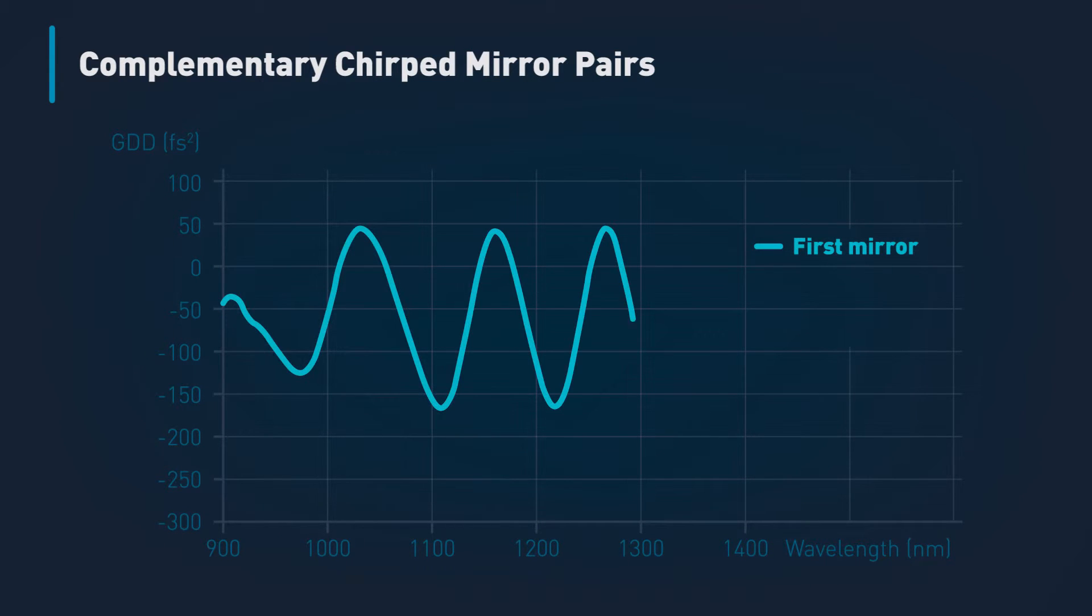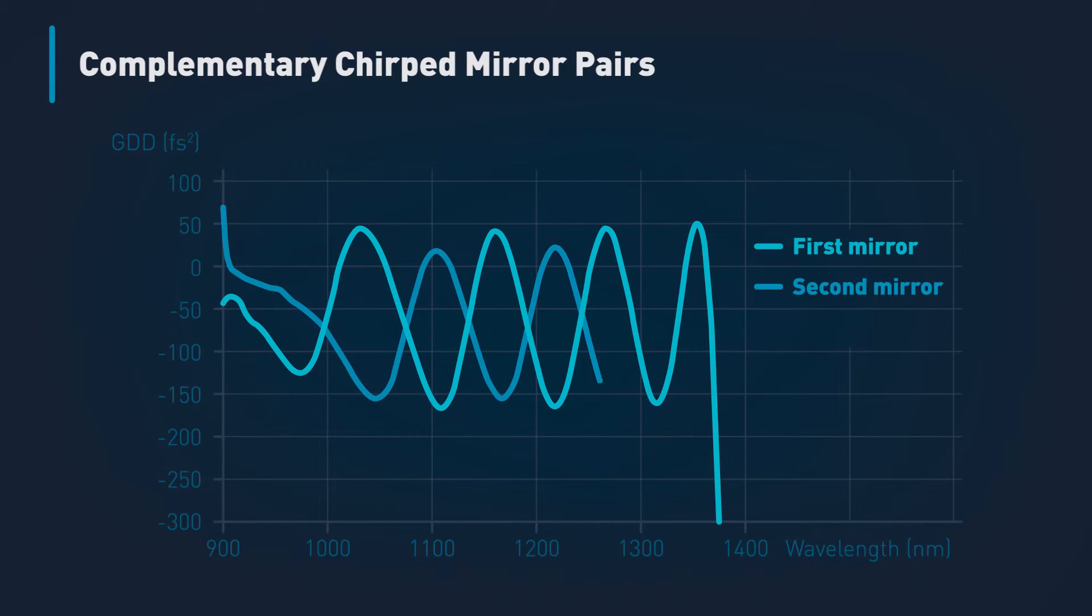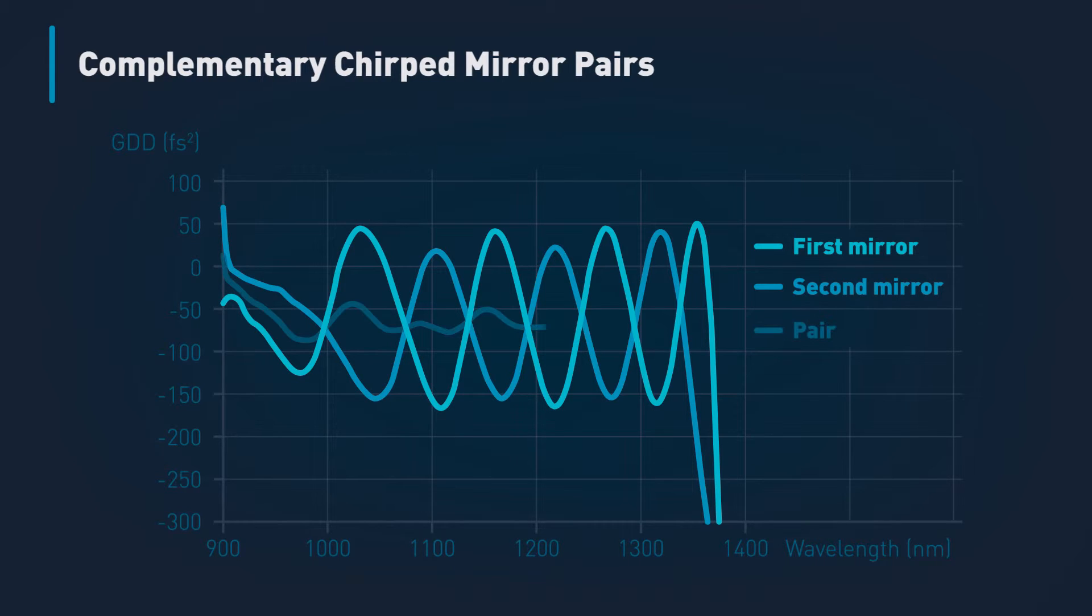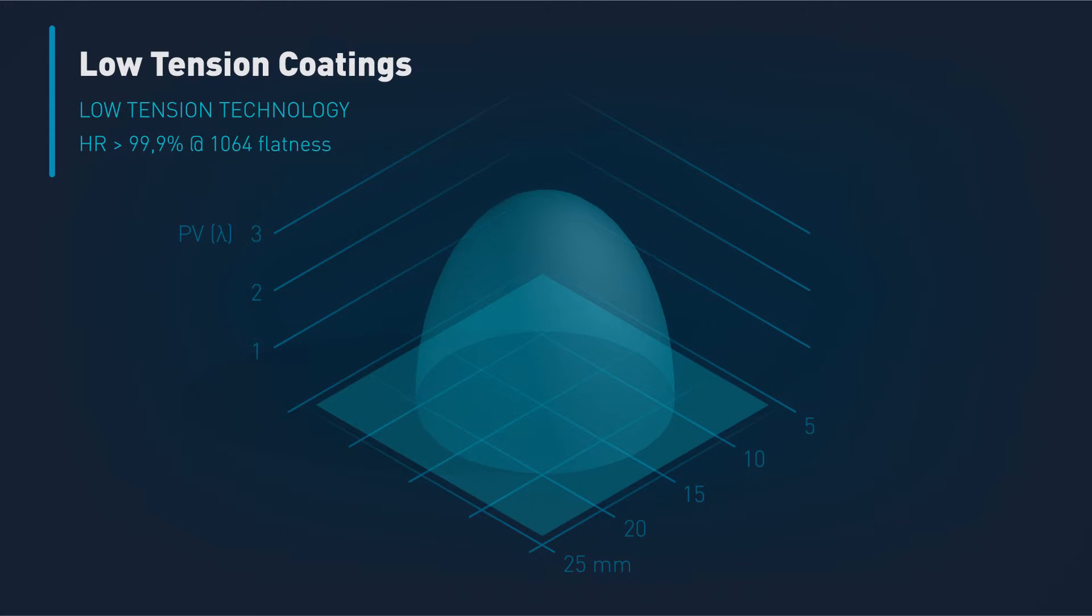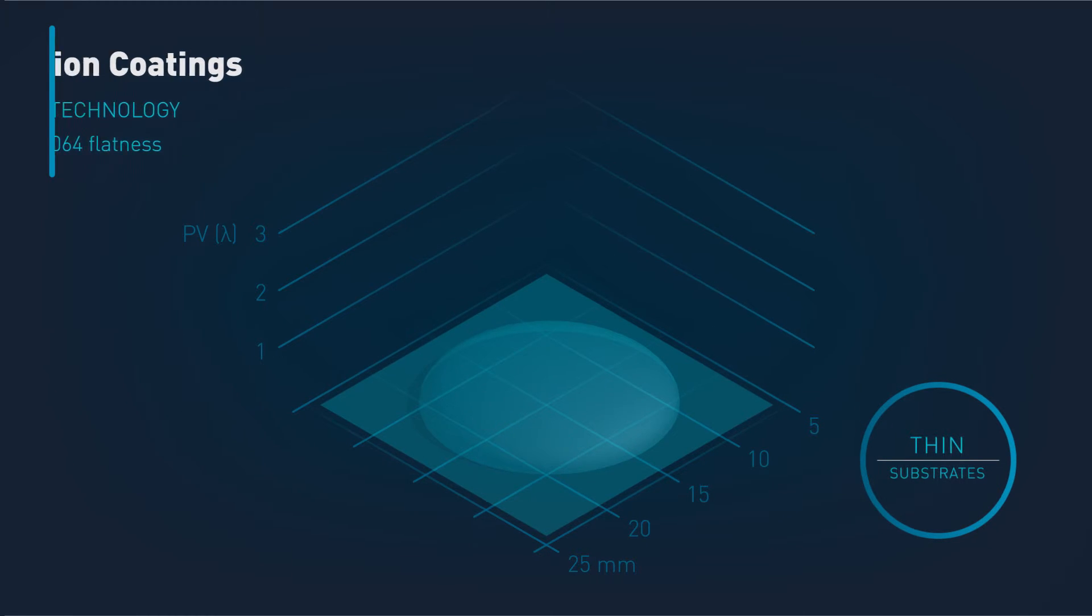Our complementary chirped mirror pairs are used for broadband group dispersion compensation in ultra-fast laser systems. Our low-tension coatings on thin substrates improve flatness and even achieve the same performance as the uncoated substrates.